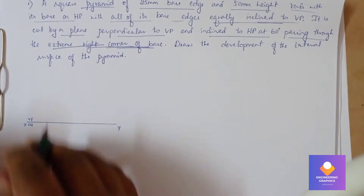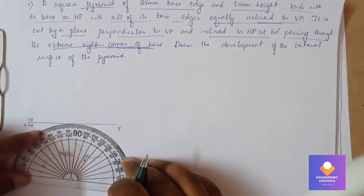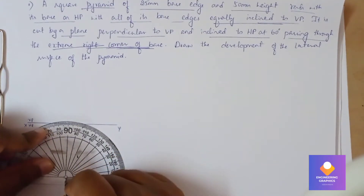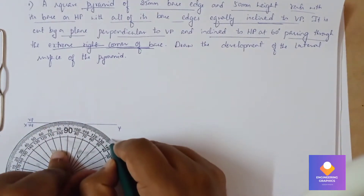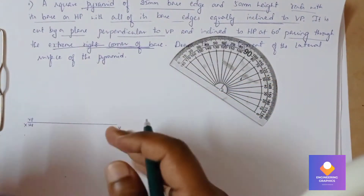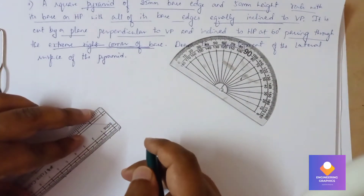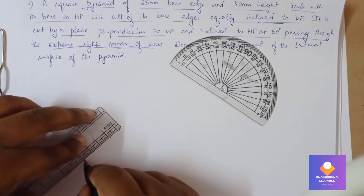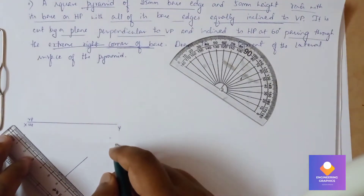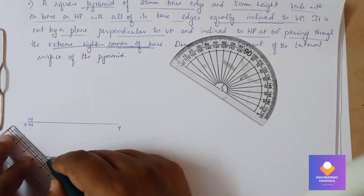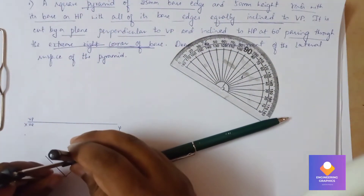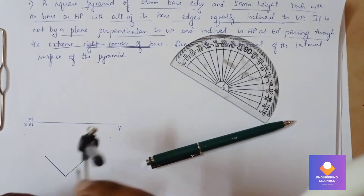First we draw the XY line with VP and HP in the first quadrant. With the help of a protractor, I will mark a reference point. From this reference point we mark 45 degrees on both sides. Then I draw a line of length 25mm from the reference point to each angle point. We also draw a line of length 25mm on the other side. Take the compass, measure 25mm, and cut the respective arc from the reference edges.